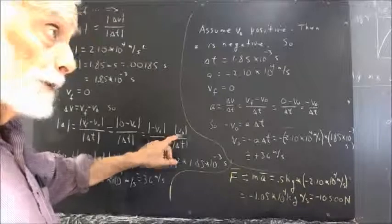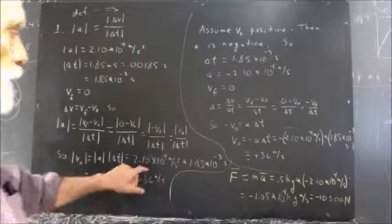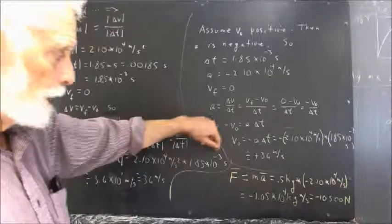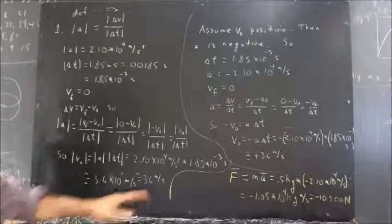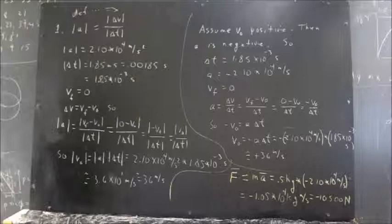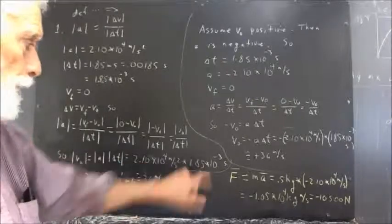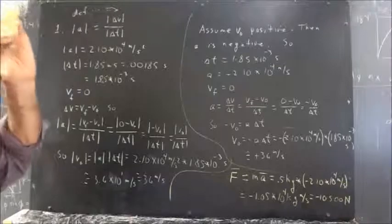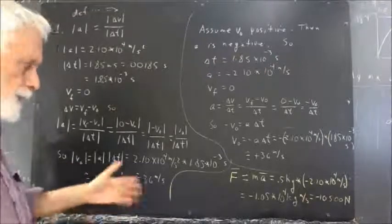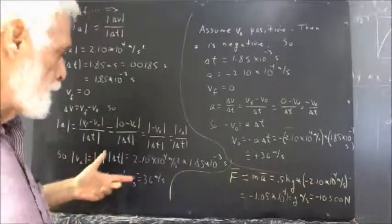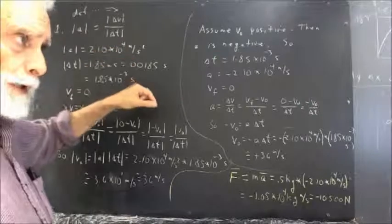We want to know what V0 is. The absolute value of V0 is the magnitude of A times the magnitude of delta T, which is 2.10 times 10 to the 4th meters per second squared, multiplied by 1.85 times 10 to the negative 3rd seconds. That gives us 3.6 times 10 to the 1st meters per second, which is approximately 36 meters per second. If this calculation is done in detail, you'd multiply these numbers and get a bunch of significant figures — it's going to be 36-point-something — and you'll have to round that off appropriately.